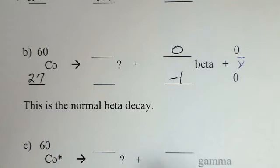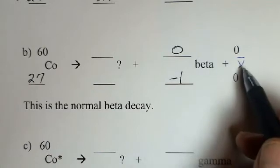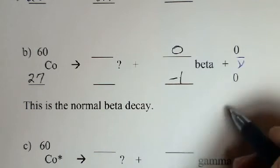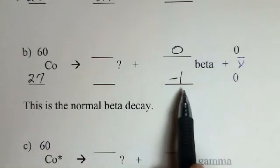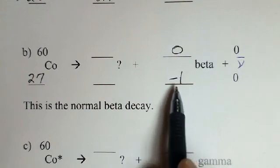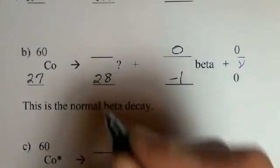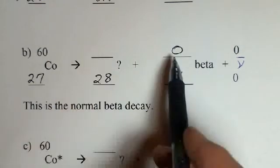And this normal beta decay, the charge is minus one. Then we have an anti-neutrino. It has zero nucleons in it and it has a charge of zero.